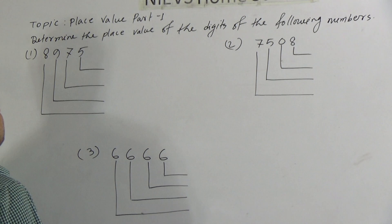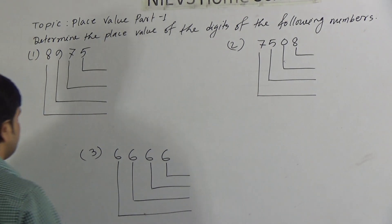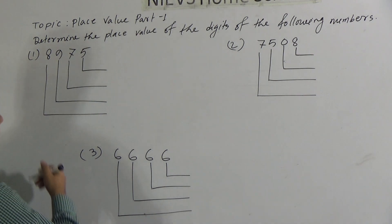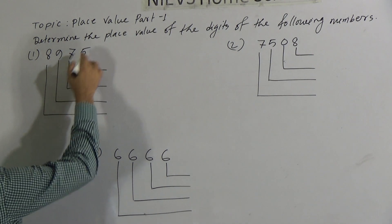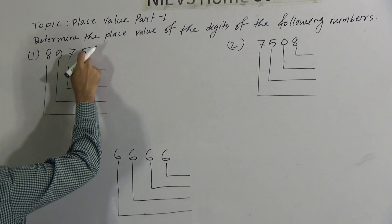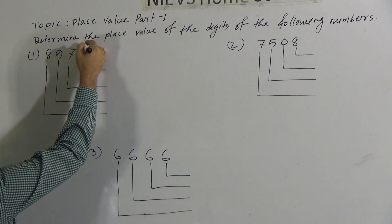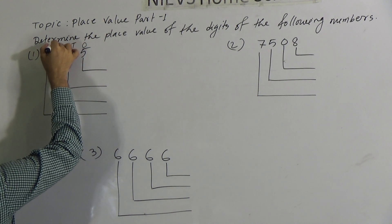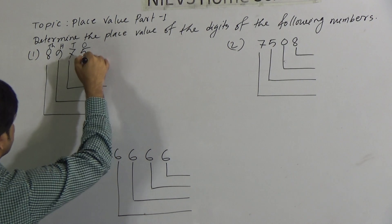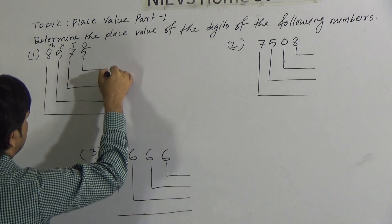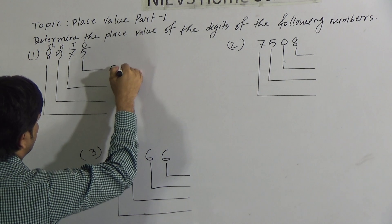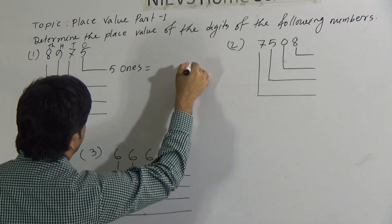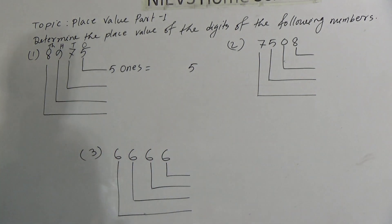I have written three numbers here. I will show the Place Value of the digits of these numbers. The first one is 8,975. We can indicate the position of each digit: this is 1s, 10s, 100s, 1000s. Starting from 1s: 5 is in the 1s position, so we write 5 ones, which equals 5.